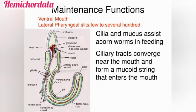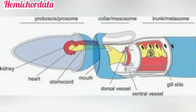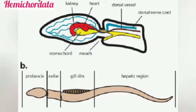Most hemichordates are ciliary feeders — around the body they have hair-like structures that help in movement and capturing prey. The circulatory system is simple and open type, containing a lacunae-type circulatory system with a dorsal heart.